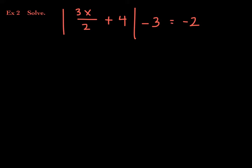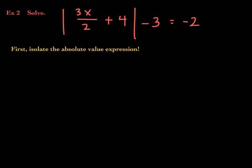The absolute value of 3x/2 plus 4, minus 3, equals negative 2. One might be tempted to say no solution because it looks set equal to a negative number. But first, before anything else, the very first thing you should do is isolate the absolute value expression — make sure the only thing on the left-hand side is the absolute value expression by itself. So we add 3 to both sides.